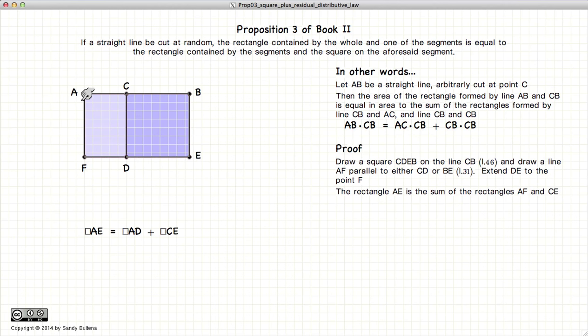Now the first thing to note is that the rectangle AF is equal to the sum of the rectangle AD plus the rectangle CE.